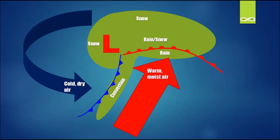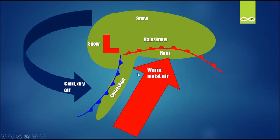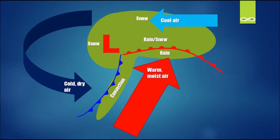Typically this warm moist air is pulled in from the Gulf of Mexico. You can imagine how the warm moist air gets pulled into the area of low pressure and wrapped around it counterclockwise. And then we have our cool air flow moving in from the east to the west, which coincides with the rain-snow mix.